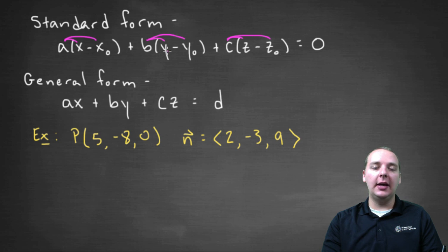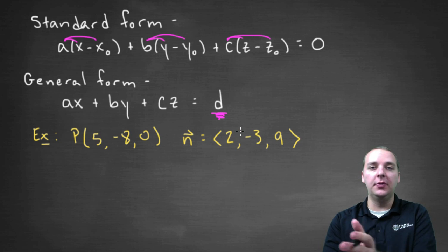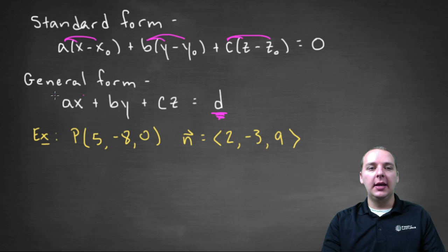And so if we take that random constant, whatever that might be, and move it to the other side, we're just going to call that constant d. We're just going to give it a name. We don't even have to call it negative d because we moved it to the right hand side. It can be negative for all we care. And so we get this watered down simplified version or formula, ax plus by plus cz equals d. That's what's called general form.